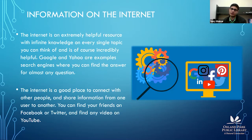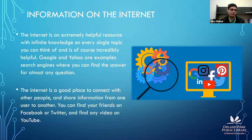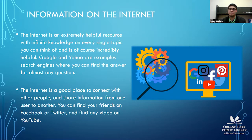The internet is an extremely helpful resource with nearly infinite knowledge. You could go on the internet and find pretty much anything on every single topic you could think of. You might not want to trust somebody on Facebook saying something, and Wikipedia isn't super reliable, but you can find information on government websites, organization websites, like the Merriam-Webster dictionary. Google and Yahoo are examples of search engines where you can find the answer to almost any question.